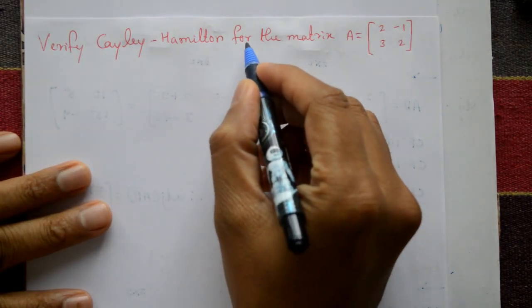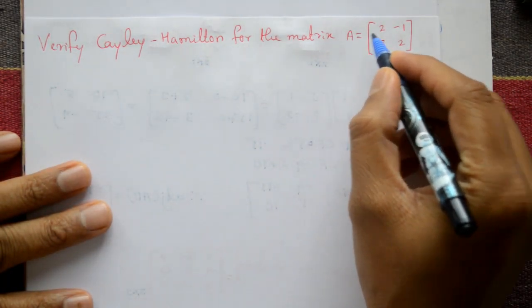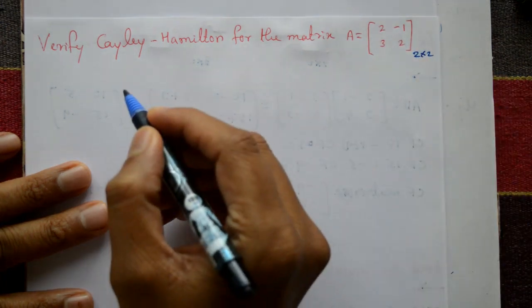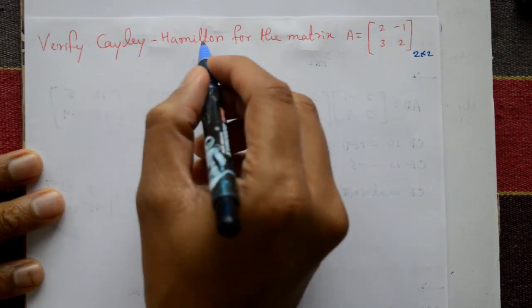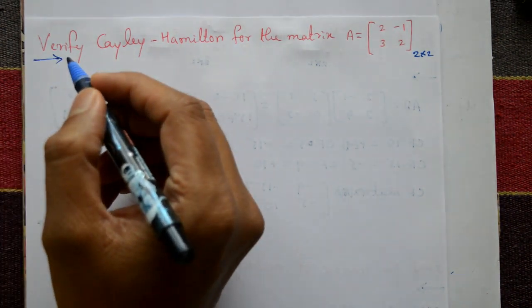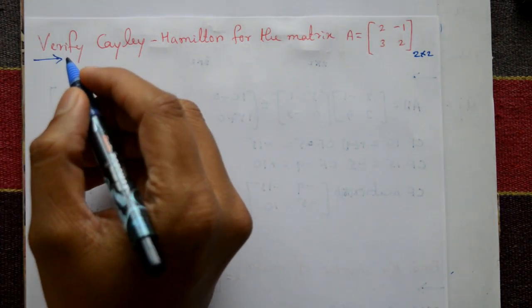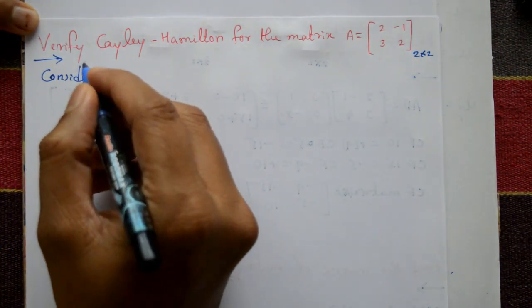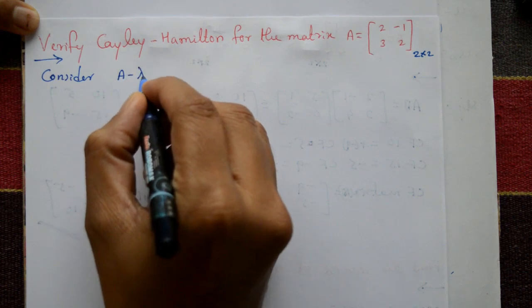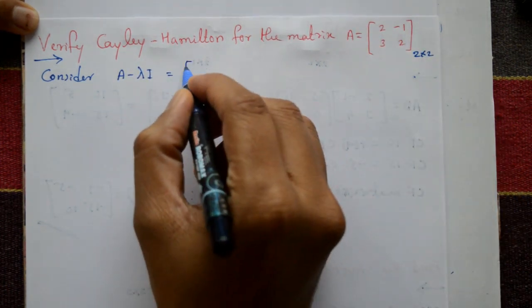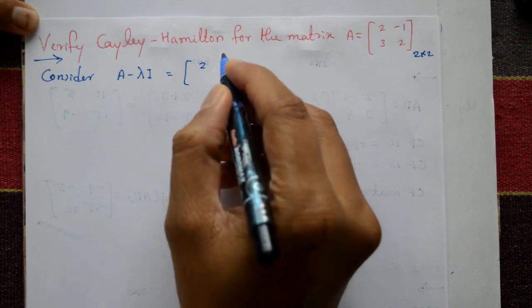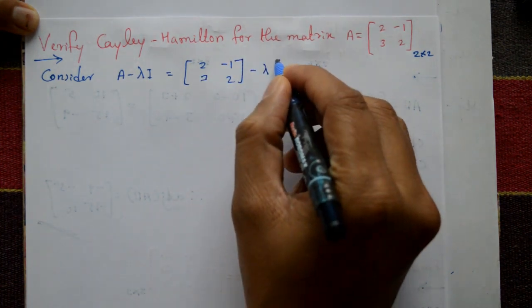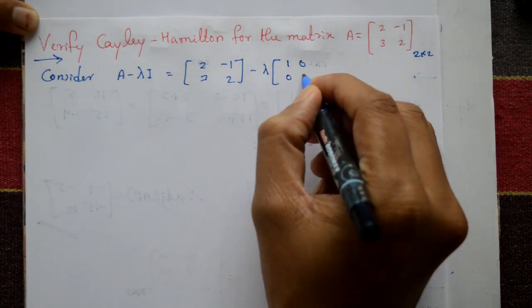Verify the Cayley-Hamilton theorem for the matrix A given as [[2, -1], [3, 2]], which is a 2×2 matrix. Now to verify Cayley-Hamilton, consider A minus lambda I, where A is the given matrix [[2, -1], [3, 2]], and I is the identity matrix [[1, 0], [0, 1]].